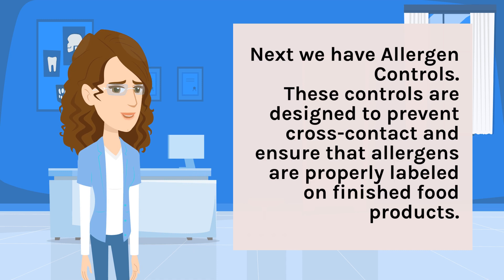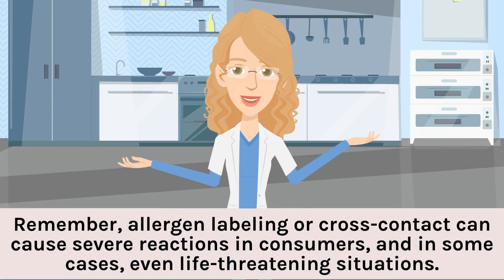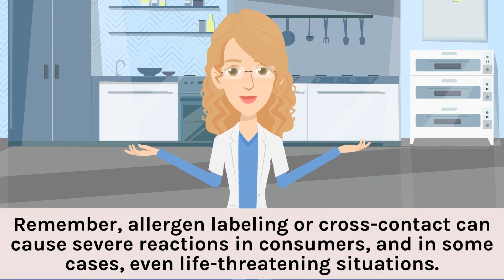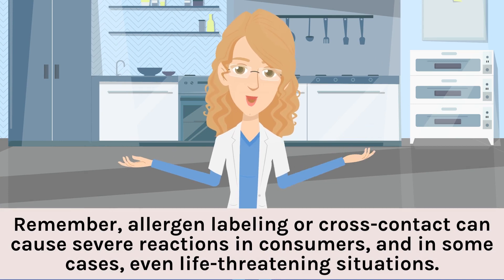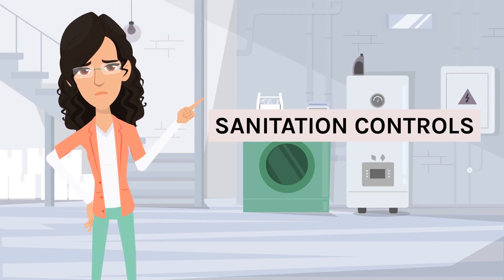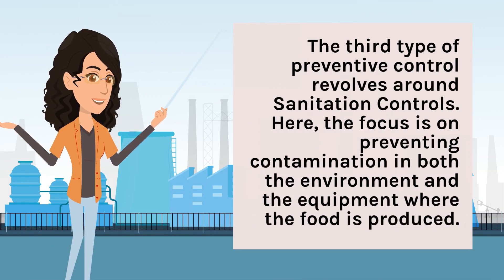Allergen controls: Next, we have allergen controls. These controls are designed to prevent cross-contact and ensure that allergens are properly labeled on finished food products. Remember, allergen labeling errors or cross-contact can cause severe reactions in consumers, and in some cases even life-threatening situations. Proper controls in this area are vital to ensure the safety of consumers.